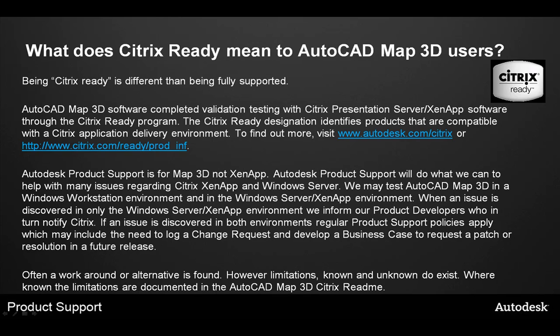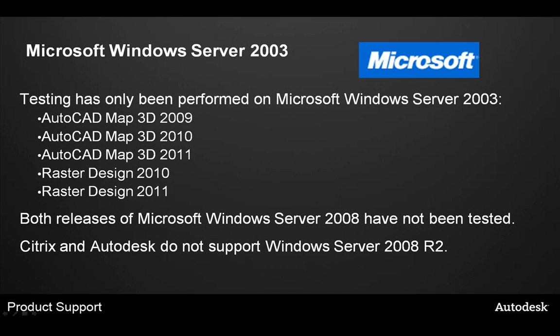There are known limitations. Where known, they are documented in the Map 3D Citrix readme, such as the suggestions to disable rollover tooltips, selection preview, and dynamic input. Only Microsoft Windows Server 2003 is supported by Map 3D for the Citrix environment — this includes AutoCAD Map 3D 2009, 2010, and 2011, as well as Raster Design 2010 and 2011. Both releases of Microsoft Windows Server 2008 have not been tested and are therefore not supported by Map 3D. Citrix and Autodesk do not support Windows Server 2008 R2 with ZenApp 4.5 or 5.0.